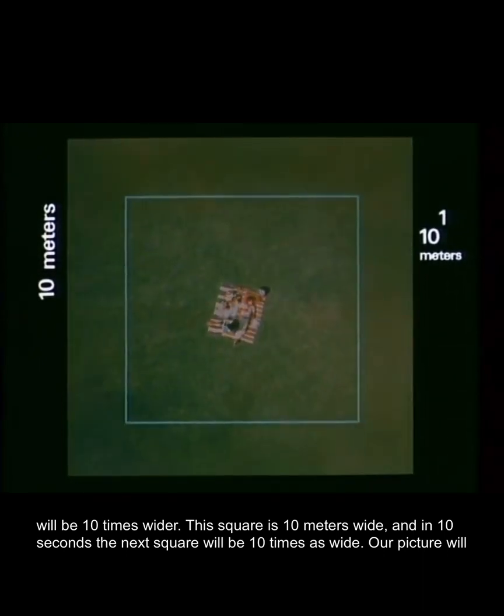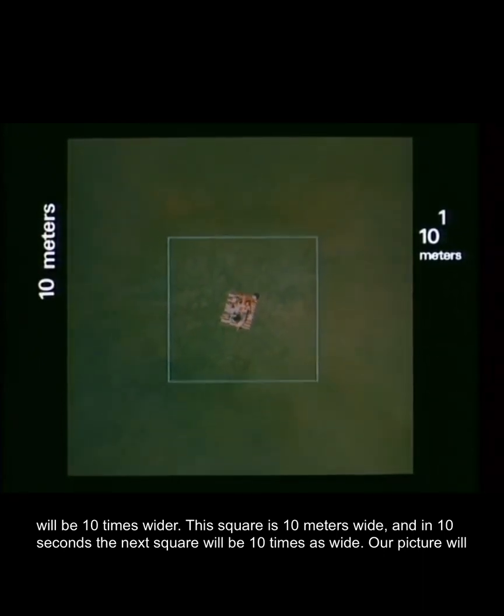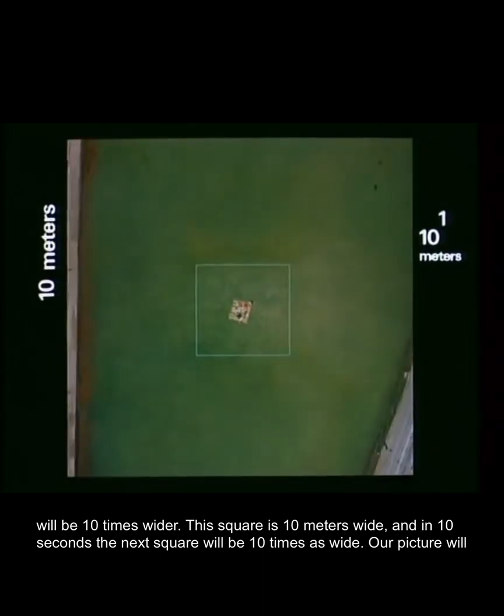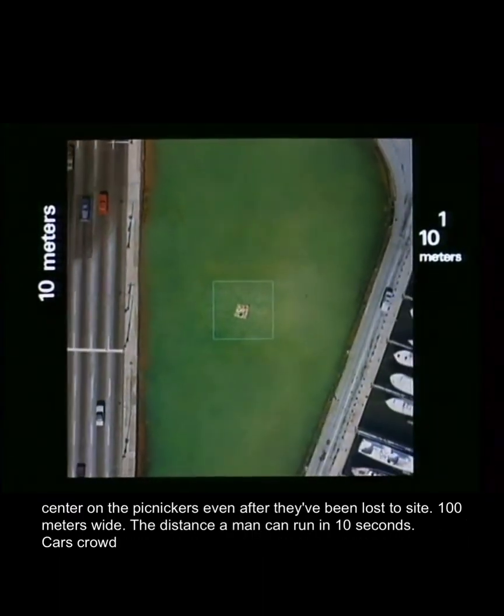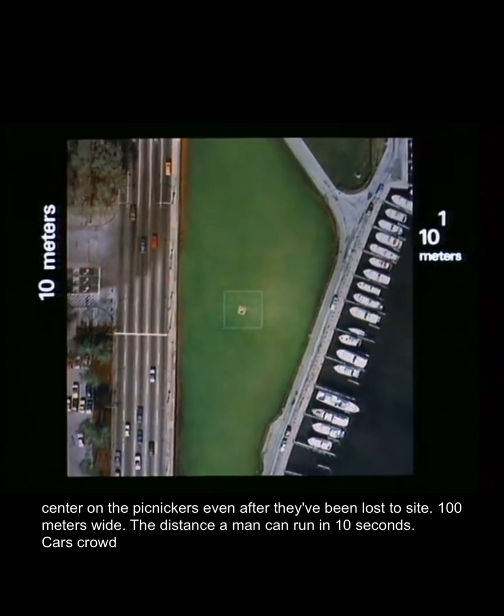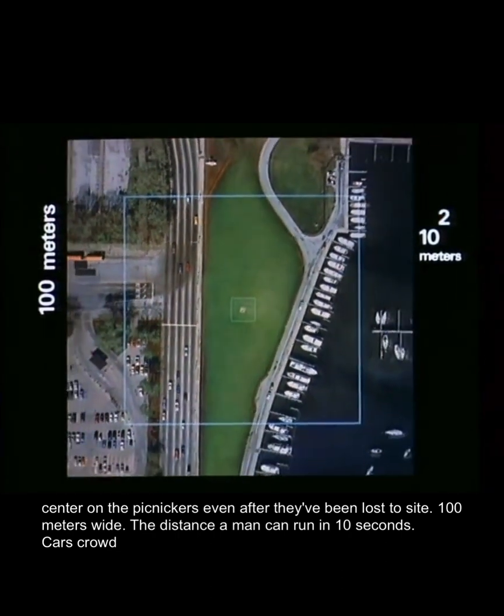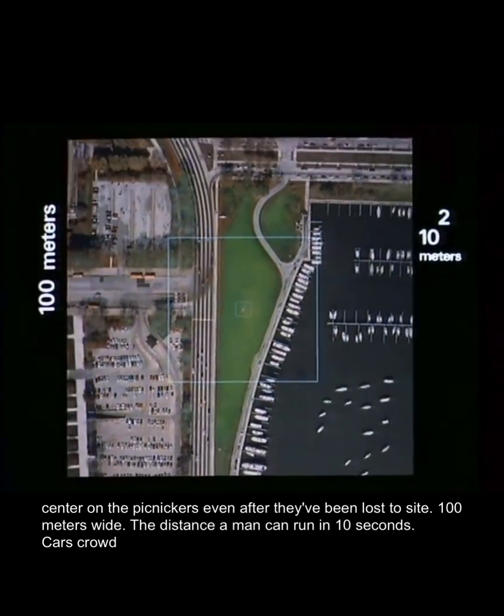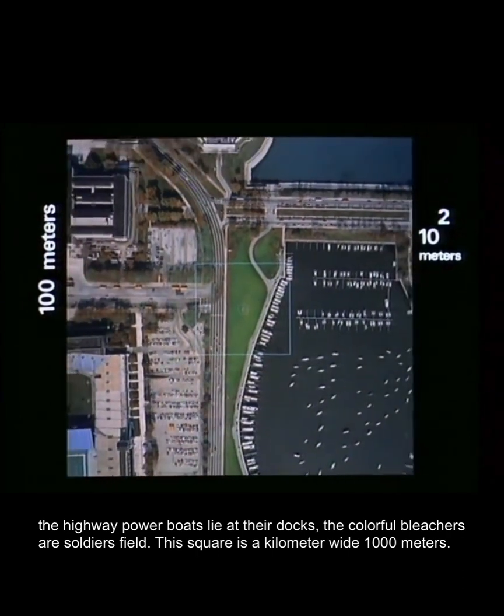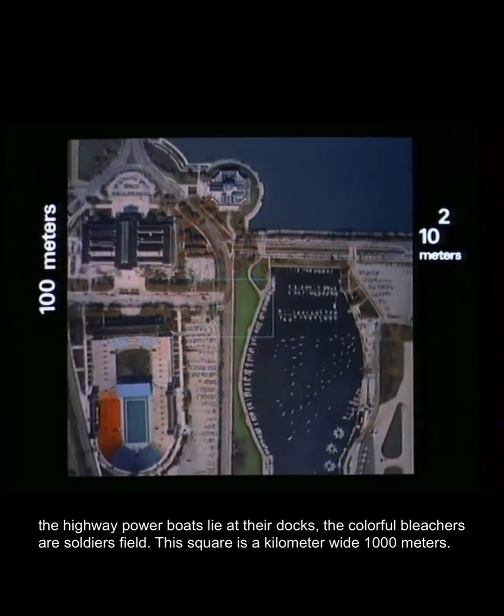This square is 10 meters wide, and in 10 seconds the next square will be 10 times as wide. Our picture will center on the picnickers even after they've been lost to sight. 100 meters wide, this is the distance a man can run in 10 seconds.